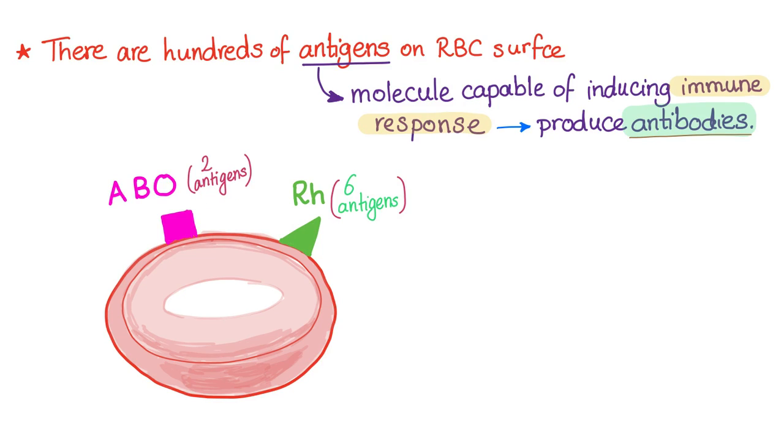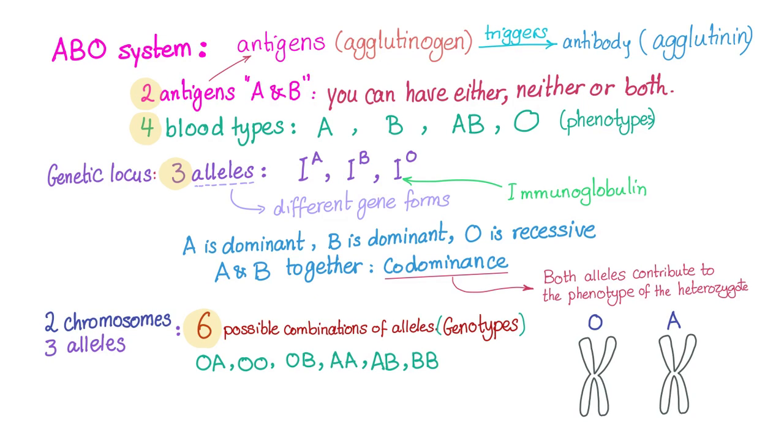ABO system has two antigens: A antigen and B antigen. O antigen does not exist. So here is your ABO system. Two antigens, A and B. There is no such thing as O antigen. You can have either A or B. You can have neither, like nothing at all. Or you can have both A and B simultaneously. These antigens are called agglutinogen. Gen means they will genesis, they will produce another thing.